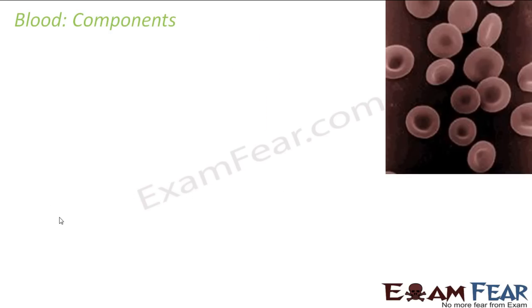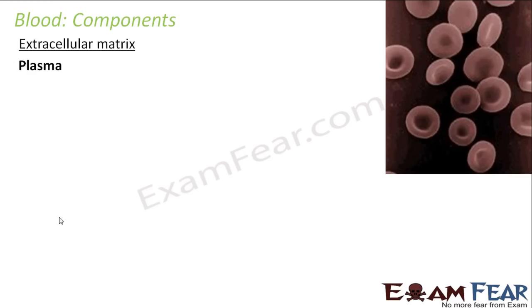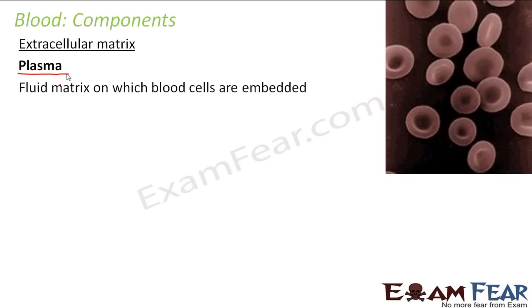Now let us look at the different blood components. Like every connective tissue has a matrix, blood also has a matrix — that is the general structure of any connective tissue. So whichever connective tissue we talk about, be it blood, bone, cartilage, or tendons, everything will have a matrix with some cells embedded in it. In the case of blood, the extracellular matrix is known as plasma, or blood plasma — it is a fluid matrix on which blood cells are embedded.